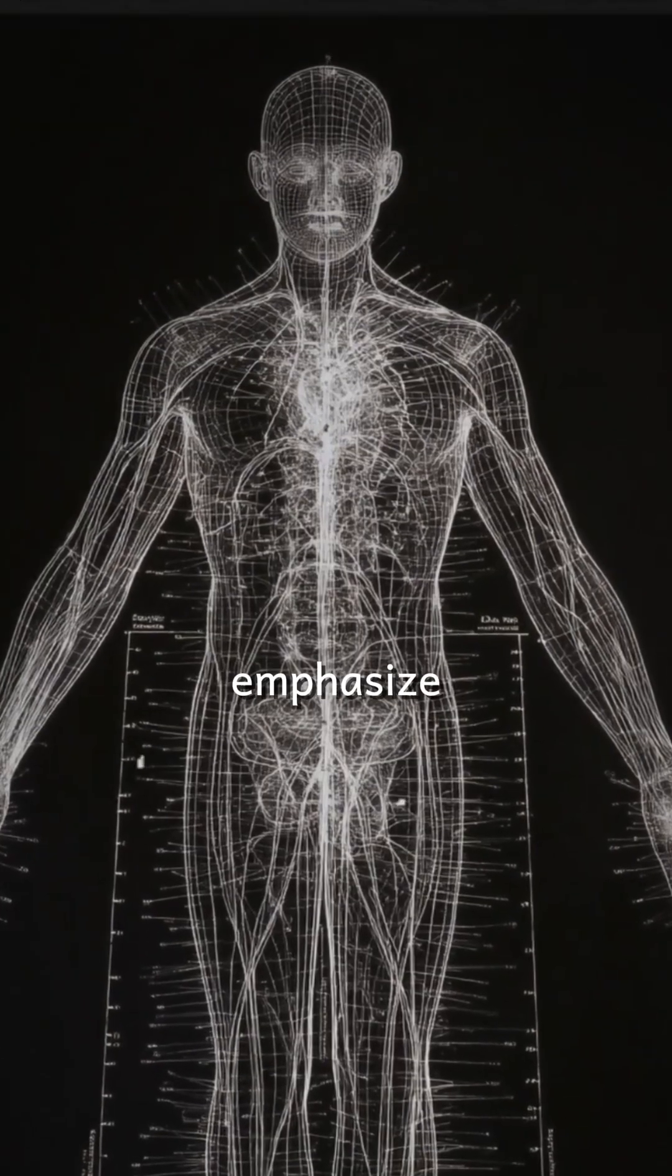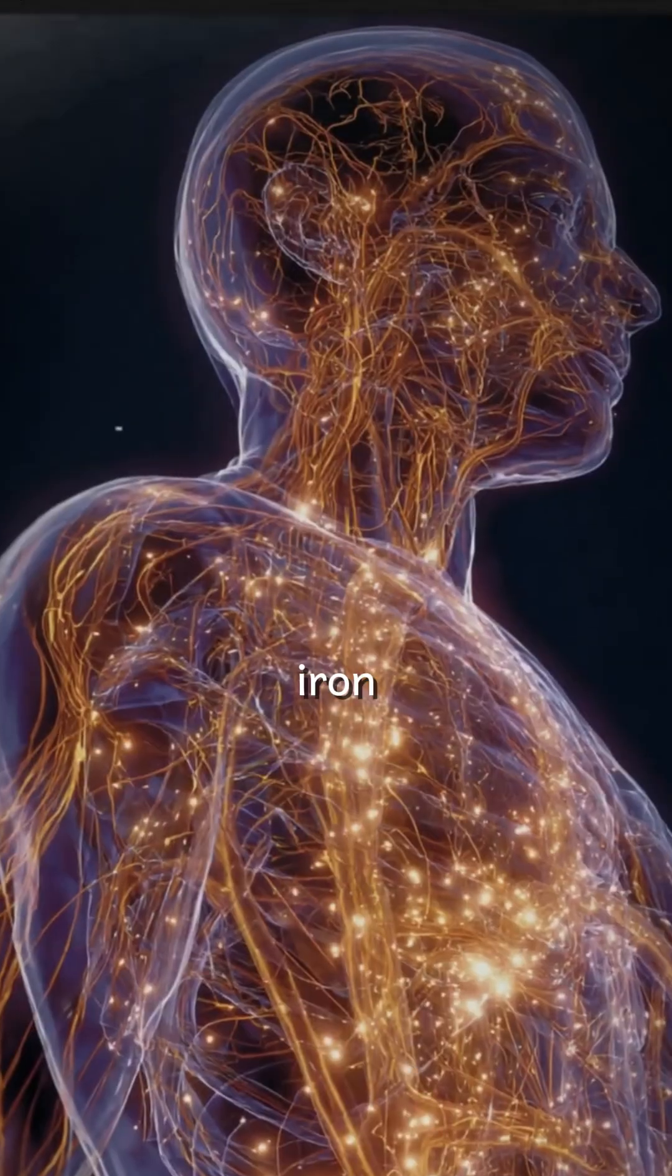We are just creatures like any other creature that are using neural cells. What I want to emphasize is that iron is an important element. We have it in hemoglobin. The hemoglobin is used for oxygen in our blood.